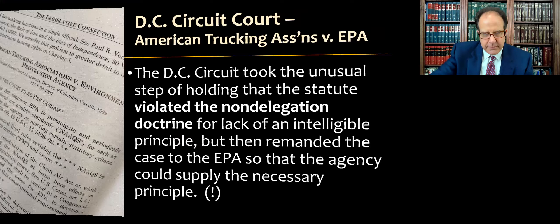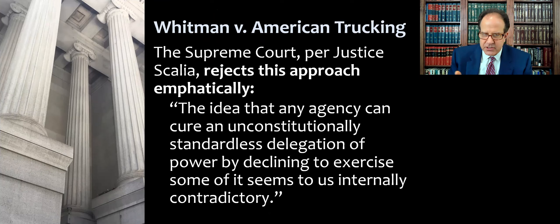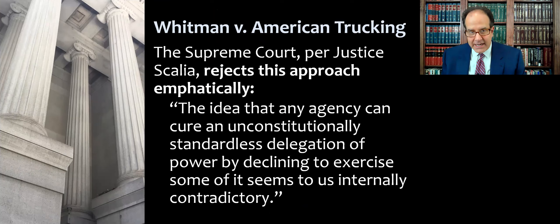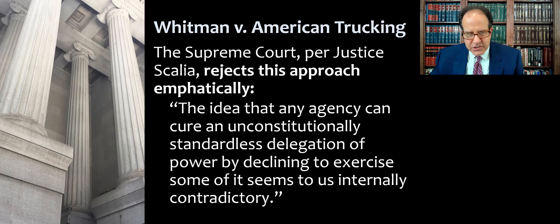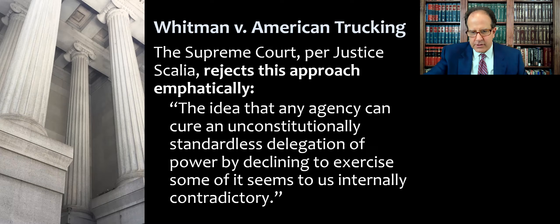The U.S. Supreme Court, when this went up on appeal, did not like this. Justice Scalia wrote the majority opinion, and the court unanimously rejects this approach. The idea that an agency can cure an unconstitutionally standardless delegation of power by declining to exercise some of it seems internally contradictory. Scalia seems to be ridiculing the DC Circuit, saying: if we've given too much discretion or authority to an agency, how do we fix that by asking the agency to restrain itself — like Ulysses tying himself to the mast of his ship? Instead, if the statute has a problem, the problem is with the statute and with Congress.